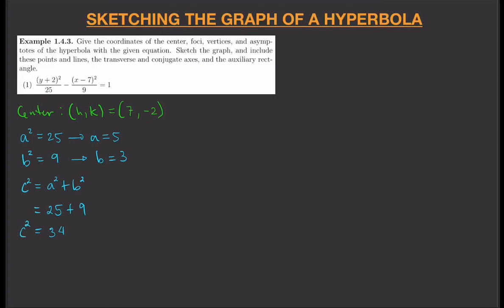Therefore, c = √34, and c gives us the distance to the focus from the center. This means we move √34 units from the center to find the foci. But we need to determine whether to move up and down or left and right — that depends on the orientation of the hyperbola.